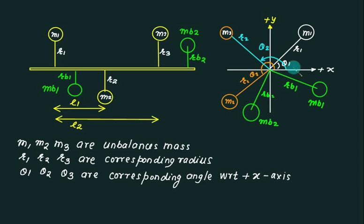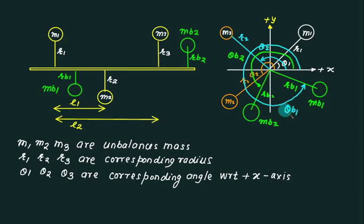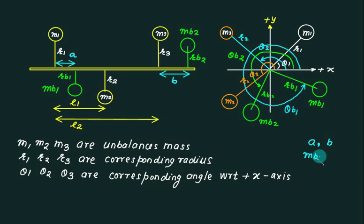The angle starting from the x-axis going this way is theta_b1, and similarly another angle equals to theta_b2. So right now, how many unknowns do I have? We also need to determine what these distances should be — let's call one distance 'a' and the other distance 'b'. So currently I have unknowns: distance a, distance b, mb1, mb2, rb1, rb2, theta_b1, and theta_b2.